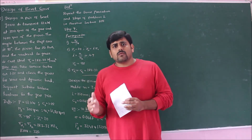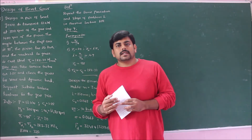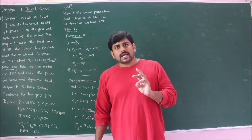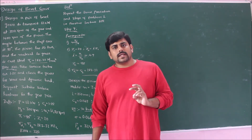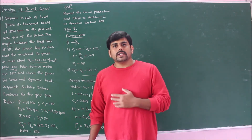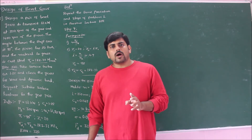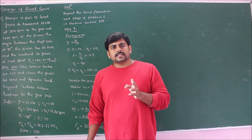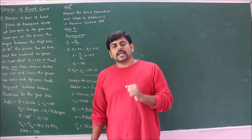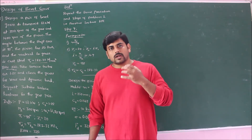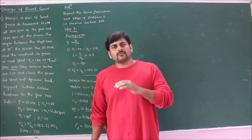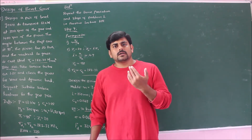Follow the same procedure used in the previous lecture (Lecture 2 of Module 4). Step 1: find the pitch cone angles delta-1 and delta-2. Step 2: find the equivalent number of teeth. Step 3: find Lewis's form factor — since the teeth are 20-degree full-depth involute, use equation 12.5d: y = 0.154 − 0.912 / z_equivalent. Step 4: identify the weaker member — since both gears are the same material, the pinion is weaker. Step 5: calculate the module using equation 12.37.